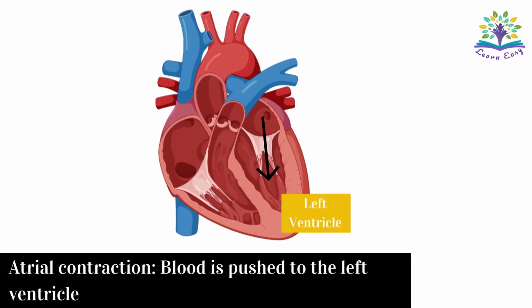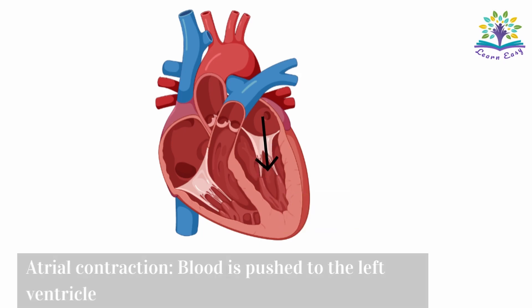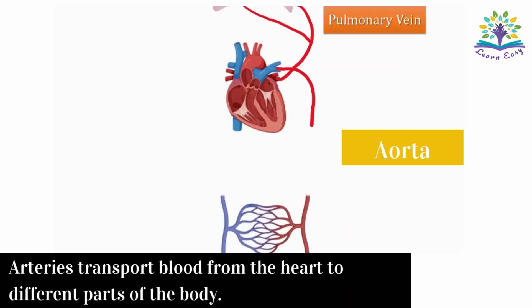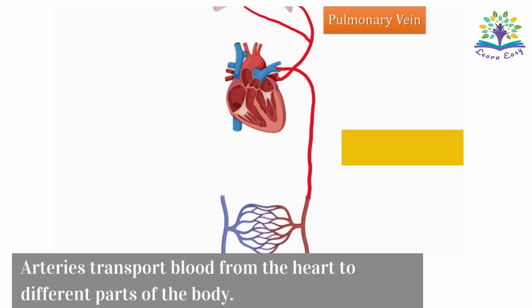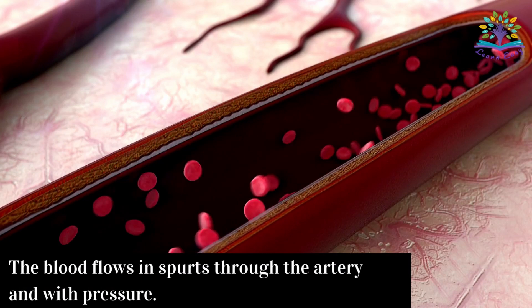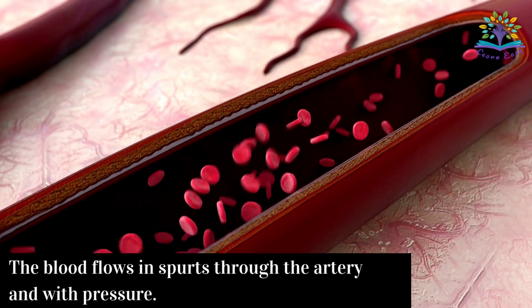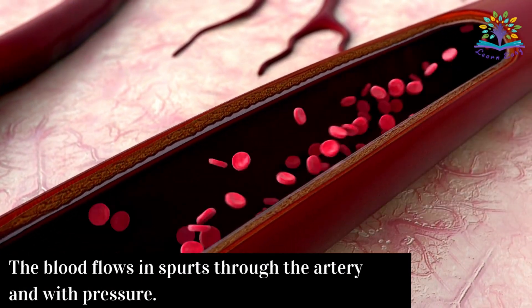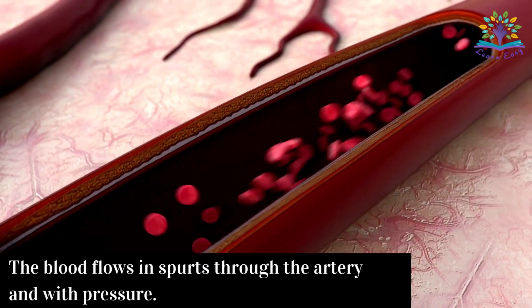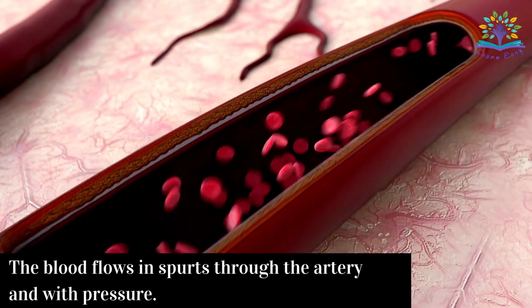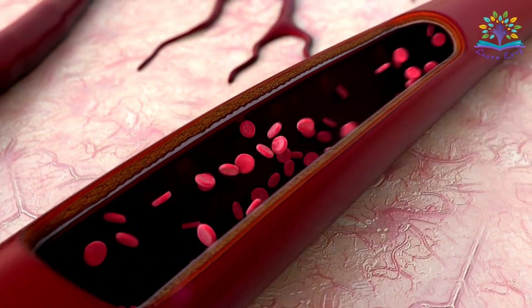During the atrial contraction phase of the heartbeat, it is pushed to the left ventricle, which is then transported to the body parts through the artery aorta. Aorta is the biggest artery present in the human body. Note that the blood flows in spurts through the artery and with pressure.